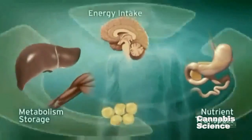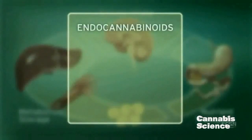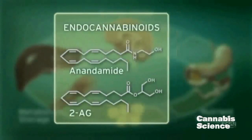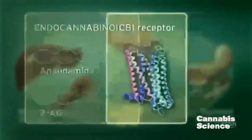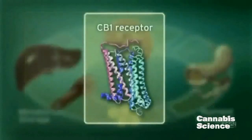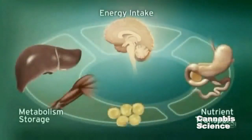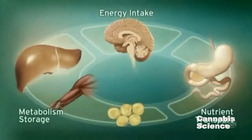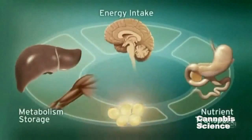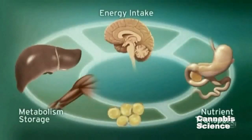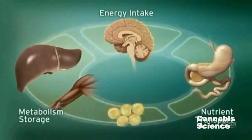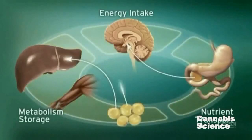The ECS regulates these processes through endogenous ligands, such as anandamide and 2-arachidonylglycerol, and the CB1 receptor. CB1 receptors are located in the brain, digestive tract, muscle and adipose tissue. Integration of these central and peripheral ECS components is achieved through neuronal and hormonal signaling.